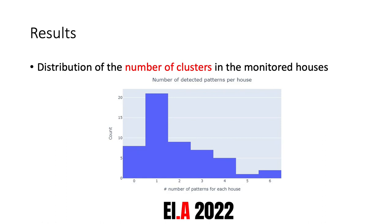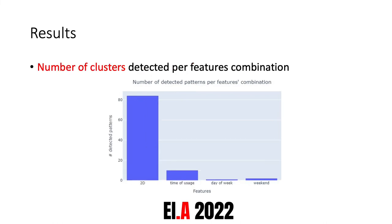Here we report the distribution of the number of clusters in the monitored houses. We found at least one cluster in the majority of them, while only 8 out of 53 houses do not contain a significant pattern. We also report the total number of clusters found for each feature combination, and we can clearly see that the majority belong to the two-dimensional clustering plan formed by peak power and time duration, while the three-dimensional clustering plans account for only a minor part of the total clusters.